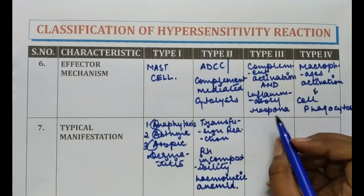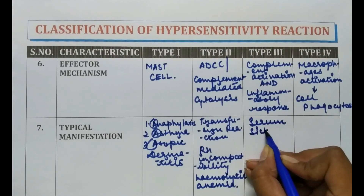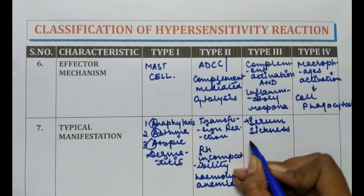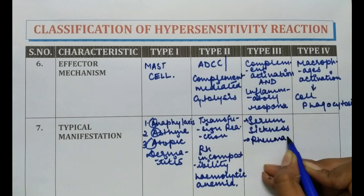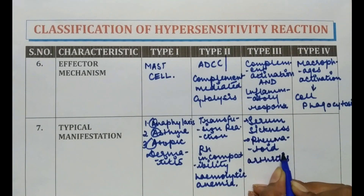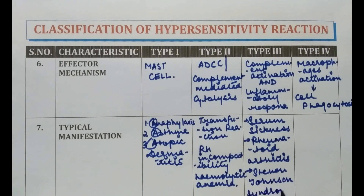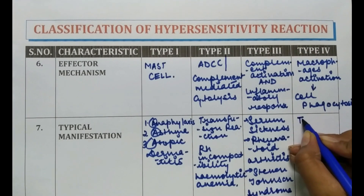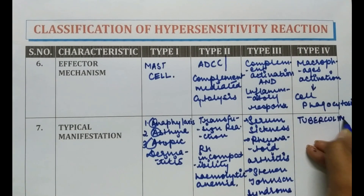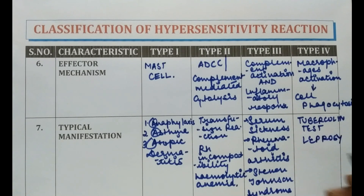Type 3 reaction is involved in serum sickness, rheumatoid arthritis, and Stevens-Johnson syndrome, which is caused by sulfonamides. Type 4 reaction manifestations include the tuberculin test, leprosy, and contact dermatitis.